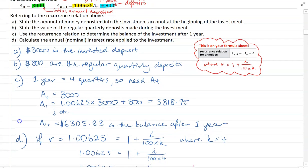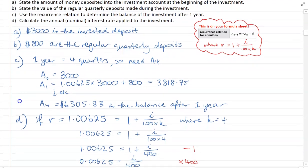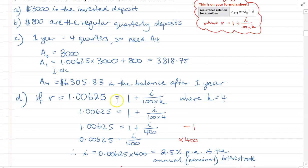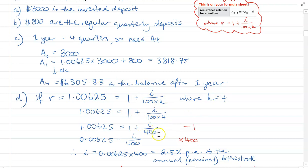For Part D, we pull apart the R value of 1.00625, knowing it's made up as 1 plus the nominal or annual interest rate divided by 100 by the number of compounding periods. We know that the compounding periods per year is four because it's quarterly. Substituting all those values in, it's simply a matter of solving the equation for i, and you should end up with an interest rate of 2.5% per annum.